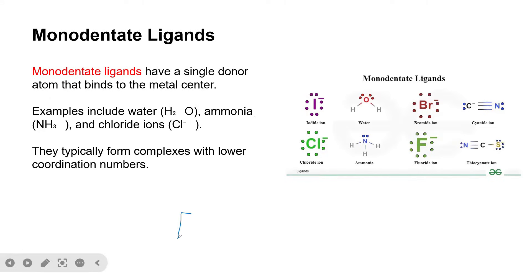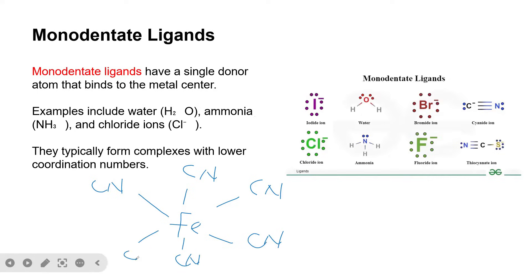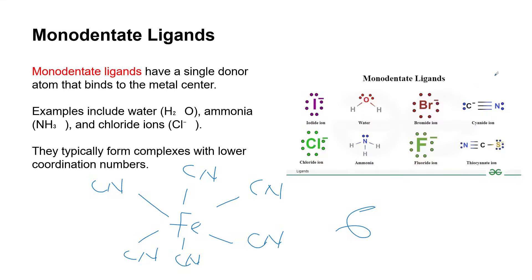For example, if a metal ion has six cyanide ligands — one from each angle — the coordination number is six. Examples of monodentate ligands include cyanide, bromide ion, thiocyanate, chloride ion, and ammonia.